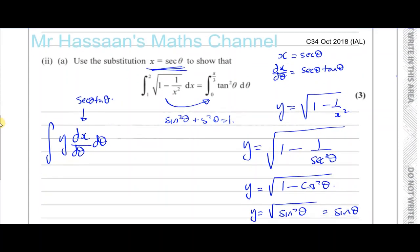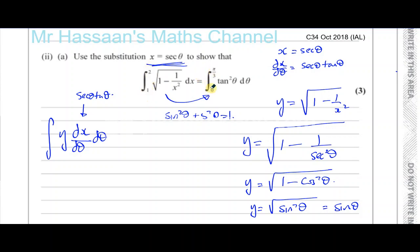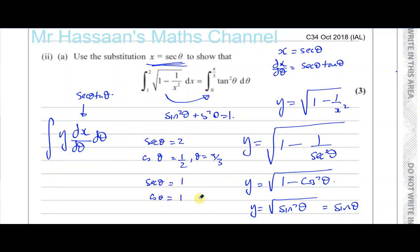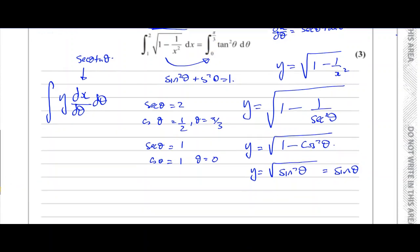The only thing left is to change the limits. We know x equals sec theta. So when x equals 2, sec theta equals 2 — that's the same as cosine theta equals one half. So theta equals 60 degrees, which is pi over 3. And when x equals 1, sec theta equals 1, so cosine theta also equals 1, which means theta equals 0 degrees. So we've shown how the limits become 0 and pi over 3.